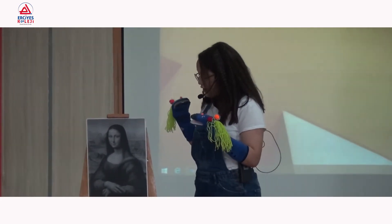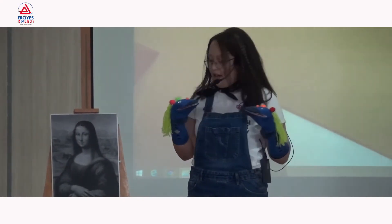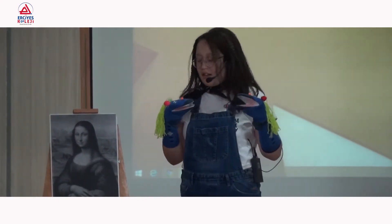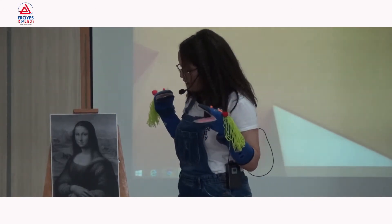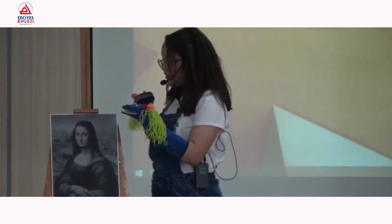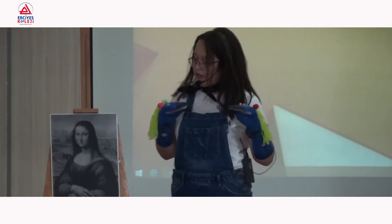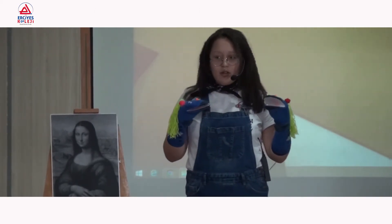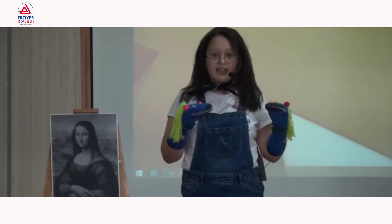In Mona Lisa's picture, under the bridge, there is a 7 and 2. And Leonardo da Vinci, I think, hid secrets — one of them. And when we look at the eyes, in the left eye there is an L, and in the right eye there is an S. I think L is Leonardo. But what is S?